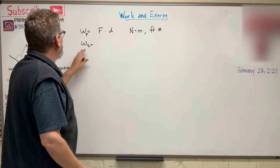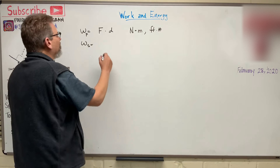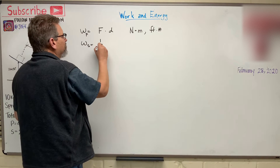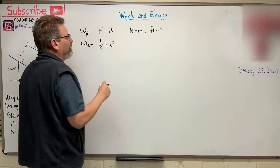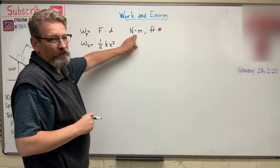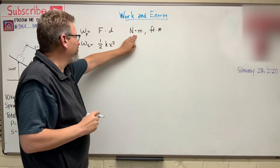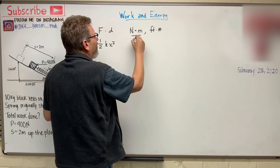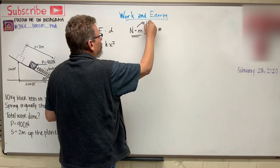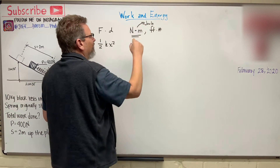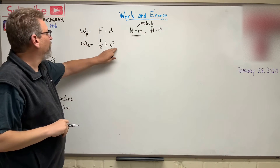When you're talking about work done by a spring, you use the potential energy of a spring equation, which is one-half kx squared. A newton times meter — do you remember from physics class? We could call that a joule. So you might just see a capital J for your work.